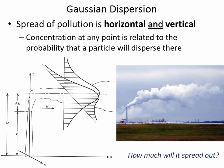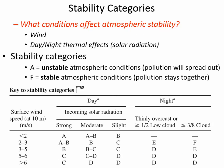Wind speed is one factor in the stability classification. Solar radiation is another: higher solar radiation causes more unstable conditions, making the plume spread out more due to heat rising from the ground surface. The more sunshine there is, the more unstable the atmosphere becomes.